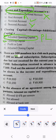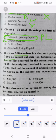There are 500 members in the club, each paying 100 as annual subscription. Subscription due but not received, subscription received in advance. So you will need to adjust the amount in income and expenditure account.